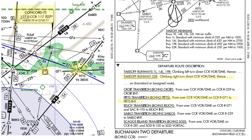Now we finally read through the procedures. When the first part of the procedure is the same for more than one transition, they give the common part and then the word 'thence.' You pick up reading from there on your particular transition. In this case, for takeoff on runway 32 right, climbing right turn, direct CCR VOR — then on the Pitts transition, from over the VOR on CCR radial 071 to Pitts intersection. Alright, so that is the text description.